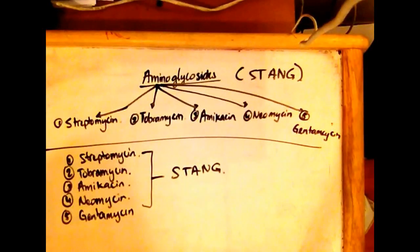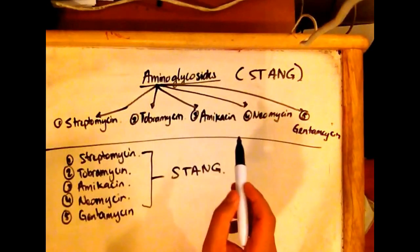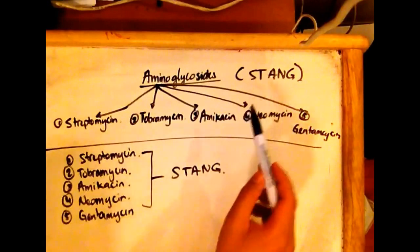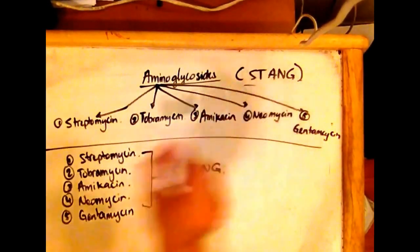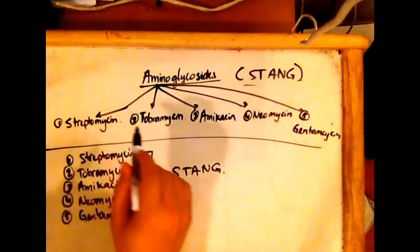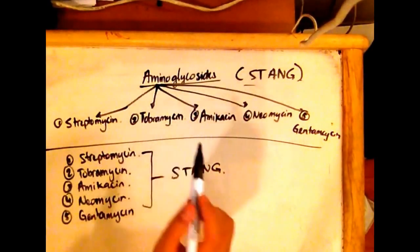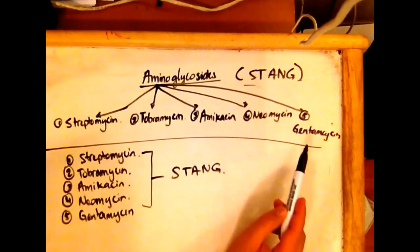What are the aminoglycosides? The aminoglycosides that we should know are the four, and the mnemonic for it is STANE. They are streptomycins, tobramycins, amikacins, and neomycins.